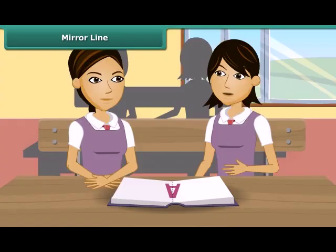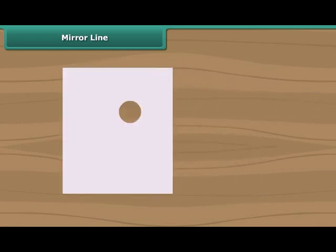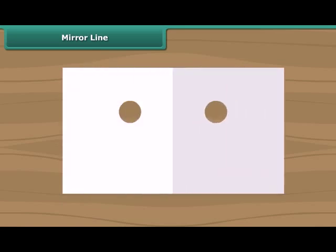Let's play a game now — the punching game. In this game, we will fold these papers and punch a hole. This is so simple. Now open these papers. We can see two holes which are symmetric. The fold is a line of symmetry.